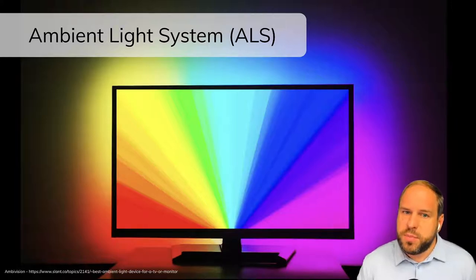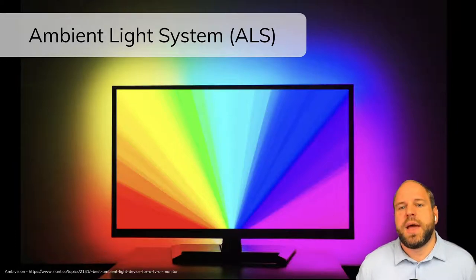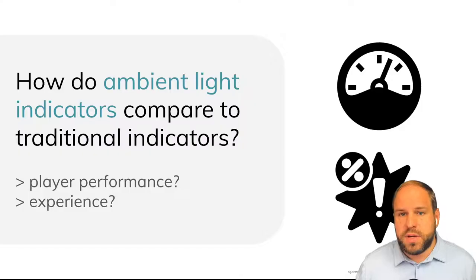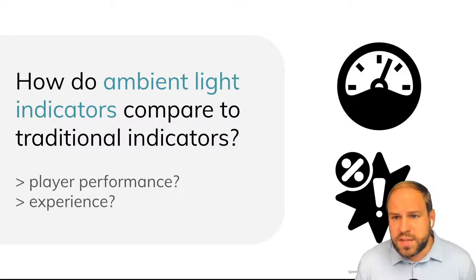So to address this, we developed an ambient lighting system for video game indicators using an LED strip that was attached around the back border of the monitor. As a teaser, our results showed that ambient lights can capture attention 17.5% faster compared to on-screen indicators. And ambient lights performed at least as well as the on-screen indicators across all the other metrics.